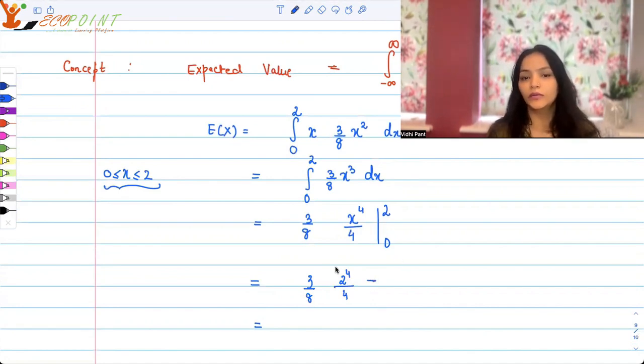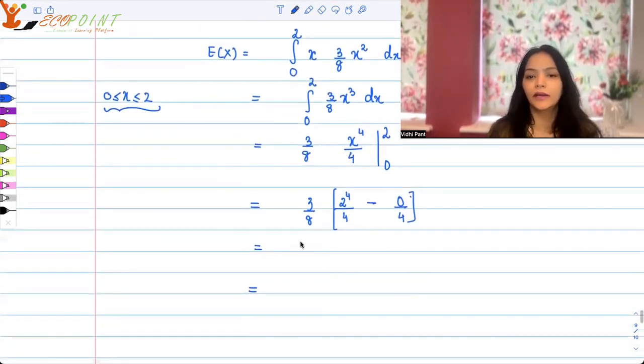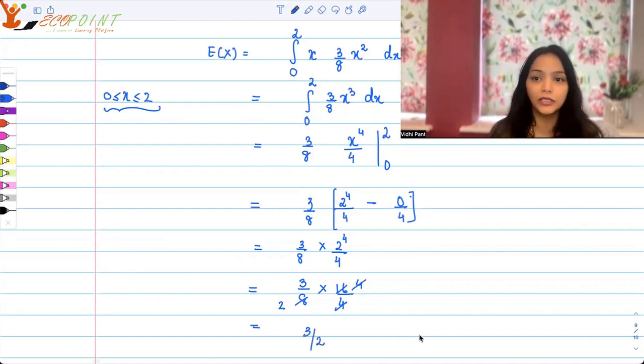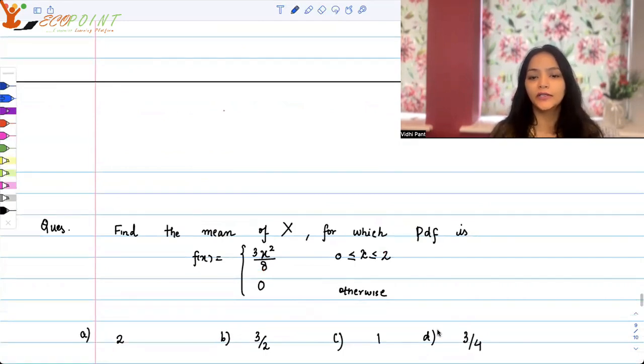When you put 0 it will just be 0 upon 4. So it's basically 3/8 times 16/4. 2 to the power 4 is 16, giving you 3/8 times 16/4, which equals 3/2. That should be the expected value of this random variable, and that's the mean.